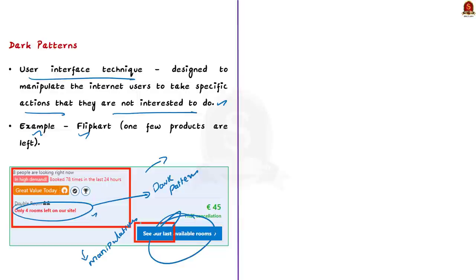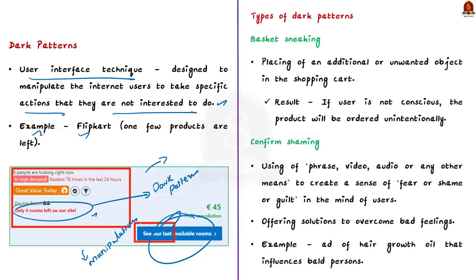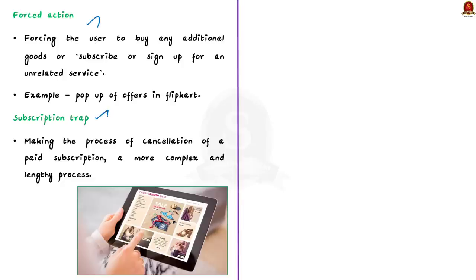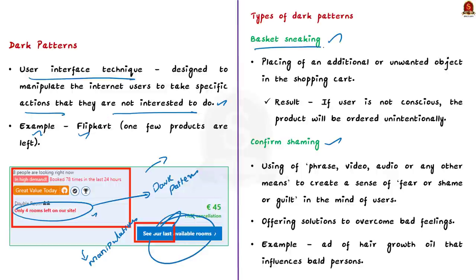There are many types of dark patterns. Some of the common ones include basket sneaking, confirm shaming, forced action and subscription traps. First, let us take basket sneaking. Basket sneaking is a dark pattern that places an additional or unwanted object in the shopping cart. So if the user does not consciously remove the product, the item will be ordered unintentionally. This type of dark pattern is most common in e-commerce and food delivery platforms.